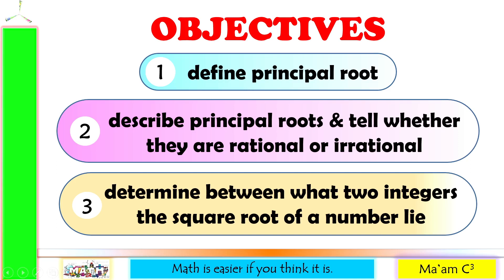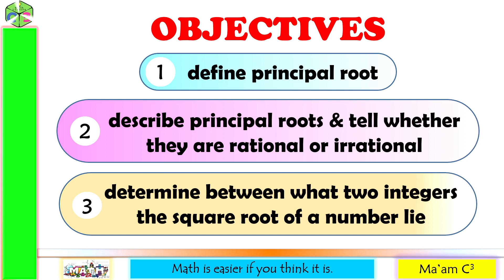Our objectives in this lesson are the following: define principal root, describe principal roots and tell whether they are rational or irrational, and determine between what two integers the square root of a number lies.